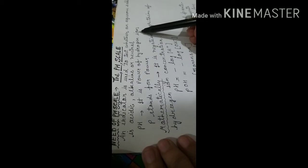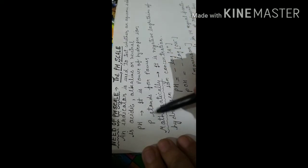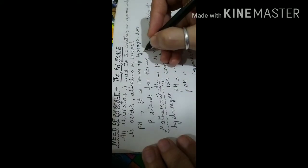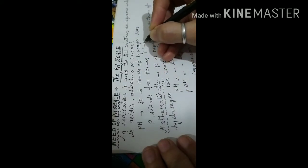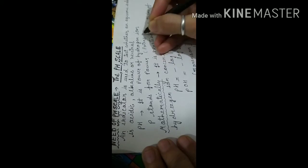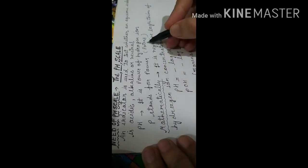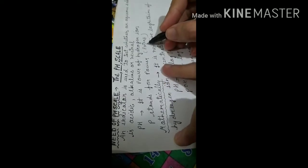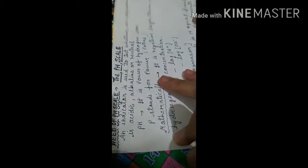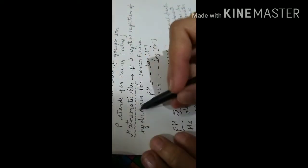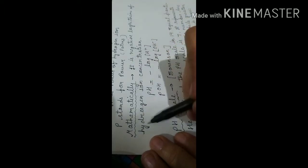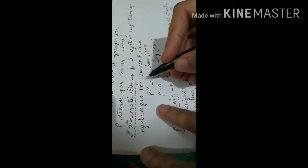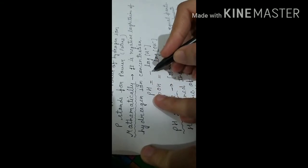pH stands for the power of hydrogen ion concentration. Here 'p' stands for potence, which means power. So p means potence, and potence means power. Mathematically, pH is the negative logarithm of hydrogen ion concentration.